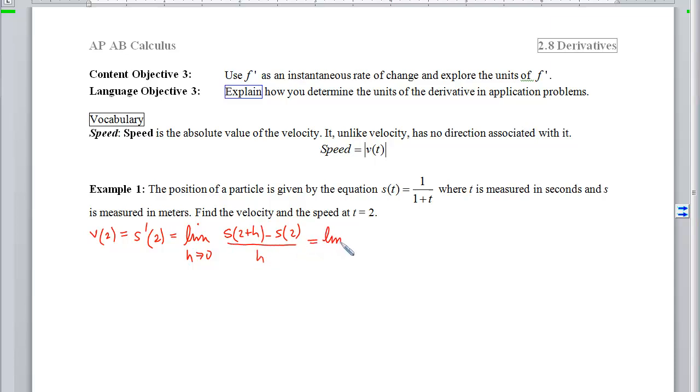If I plug 2 plus h into the function, I will get 1 over 1 plus 2 plus h. And then I'm going to subtract what I get when I plug in 2, which is 1 third. All of that will be divided by h. Remember from our previous examples that I'm going to make this complex fraction look better by multiplying by the reciprocal of h and by getting a common denominator. If I look at this first fraction, I'm going to need 3 over 3. And if I look at my second fraction, I'm going to need that factor of 3 plus h.